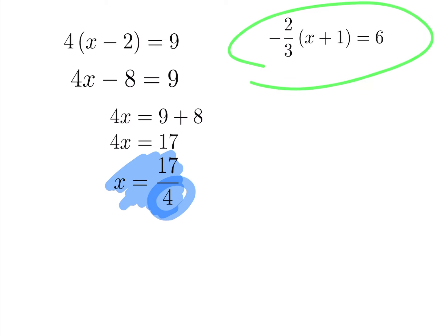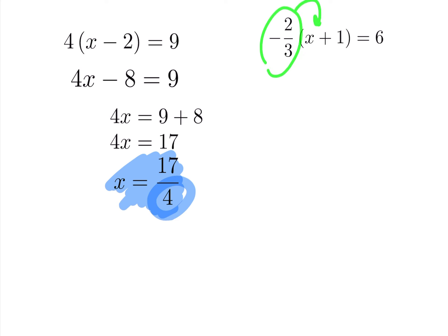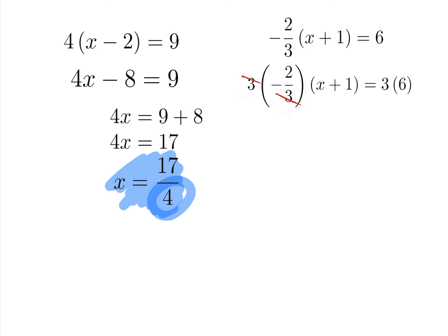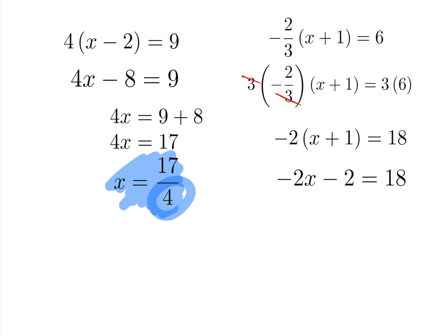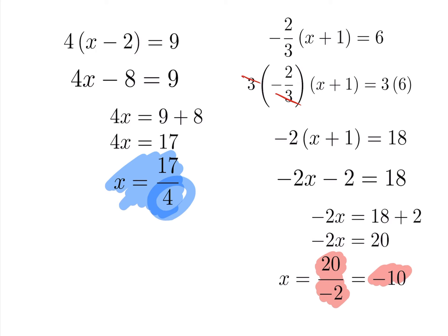For this problem, before distributing the minus 2 thirds, note that distributing it first introduces more fractions — we don't want that. So multiply across by 3 first: the 3s cancel, leaving negative 2 times (x plus 1) equals 18. Now distribute the minus 2: minus 2x minus 2 equals 18. Adding 2 to both sides gives minus 2x equals 20. Dividing across by minus 2 gives x equals negative 10.